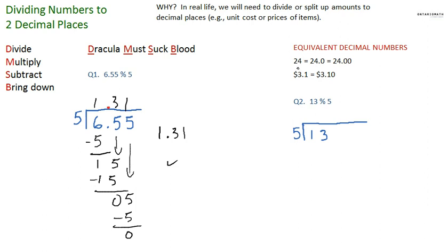So I just put a reminder up here of equivalent decimal numbers. So 24 is also equal to 24.0 or that's also equal to 24.00. If we put a decimal point, we can add as many zeros after it. It doesn't really matter. Or 3.1 is also equal to 3.10. Again, I just added a zero after the decimal point.